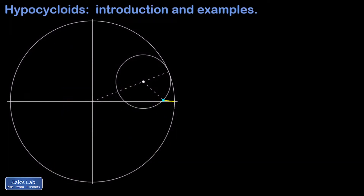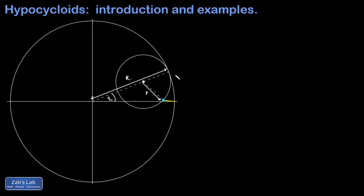Let's stop the animation and derive the parametric equations for a hypocycloid in general. I'll call the radius of the larger circle big R and the radius of the smaller circle little r. We parameterize the entire curve in terms of the angle t — the angle relative to the starting position along the positive x-axis. By the time the center of the smaller circle has arrived at angle t, the smaller circle has revolved through an angle of theta.